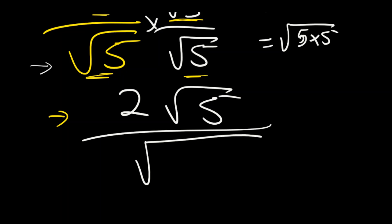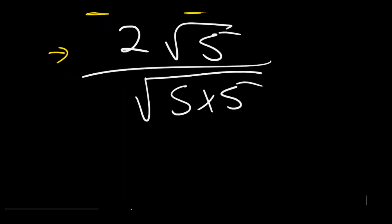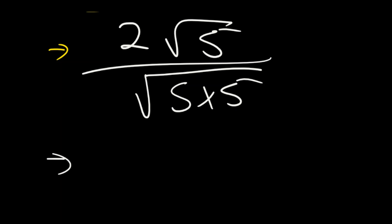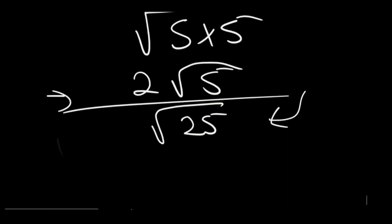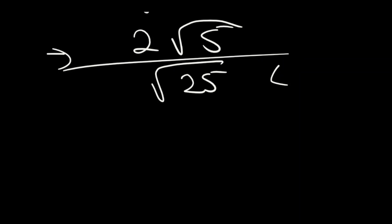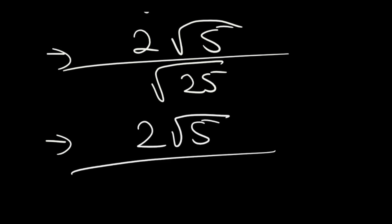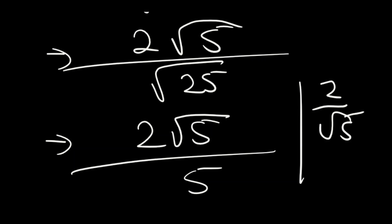We can recall that from previous videos — it's going to be five times five. From here we're going to have two root of five divided by root of 25. It's important to break everything down up to this point. Please make sure you show all your steps to get maximum marks. Then root of 25 is five, so the answer is two root of five over five — the exact same answer you get from the calculator.